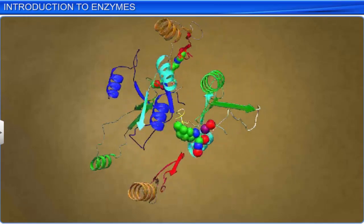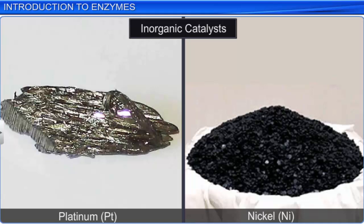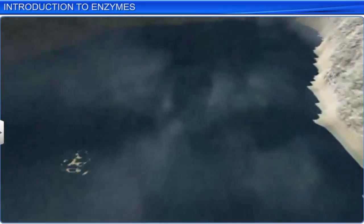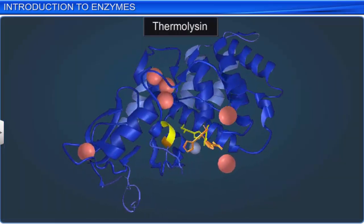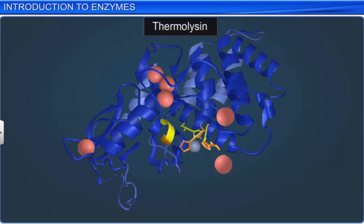Inorganic catalysts such as platinum and nickel work effectively at high temperatures and under high pressure, while enzymes are damaged at temperatures above 40 degrees centigrade. However, some enzymes such as thermolysin can be isolated from thermophilic organisms that live in high temperature environments like sulfur springs. These enzymes retain their catalytic power even at temperatures as high as 80 to 90 degrees centigrade.